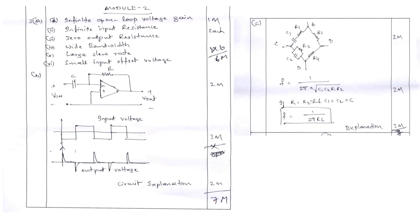For the Wien bridge oscillator C question: the circuit diagram carries two marks. The frequency formula F equals 1 divided by 2π times the square root of C1·C2·R1·R2 — writing this formula and explaining what R1, R2, C1, C2 represent for this bridge carries two marks. The complete circuit diagram explanation with the formula carries three marks, totaling seven marks.